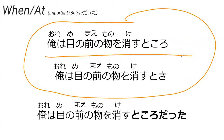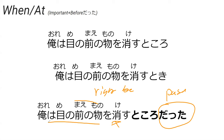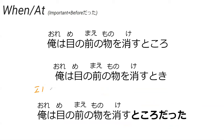Both 時 and ところ sentences are grammatically correct and you'd see both — both translated as 'when I disappear something before my eyes.' Something interesting about ところだった (past tense form): it doesn't mean after something occurred. It actually means the moment right before it could occur — it insinuates 'this was about to happen.' So 目の前のものを消すところだった means 'right before I was about to make something disappear before my eyes.'